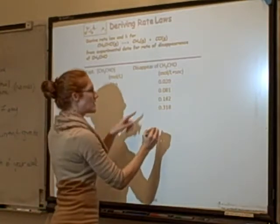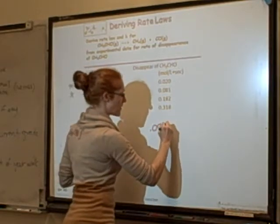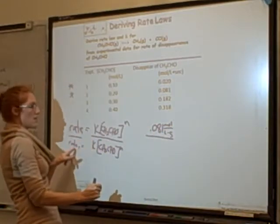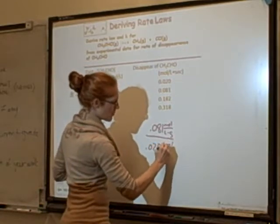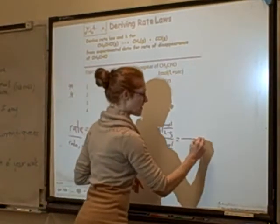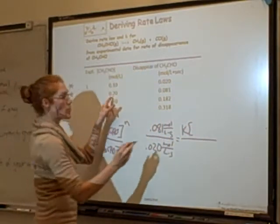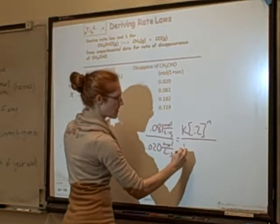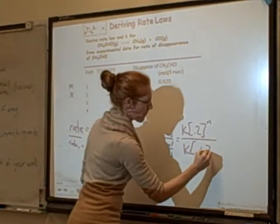Rate 2 is 0.081 moles per liter per second, from experiment 2. Rate in experiment 1 is 0.020 moles per liter per second. Now I start plugging these values in. I have k times the concentration in experiment 2, which is 0.2 moles per liter, to the power of n. And then I have k over 0.1 to the power of n.